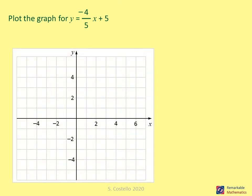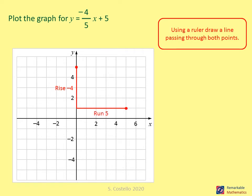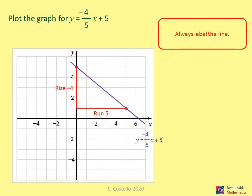Plot the graph of y equals minus four over five x plus five. Mark the y-intercept at five. Using the gradient of minus four over five, come down four from the y-intercept and across five — a rise of minus four and a run of five. Use a ruler to draw a line through both points, and label the line.